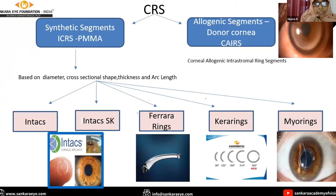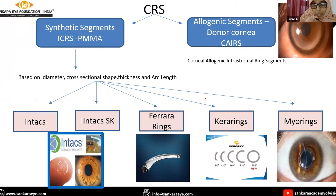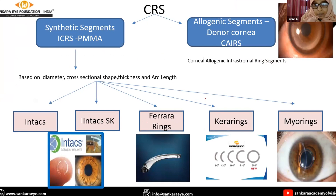Corneal ring segments can be synthetic segments made up of PMMA, known as ICRS, or they can be allogenic segments made from donor cornea, known as CAIRS. Based on different designs, ICRS can be Intacs, Intacs SK, Ferrara ring, Keraring, or Myo ring.